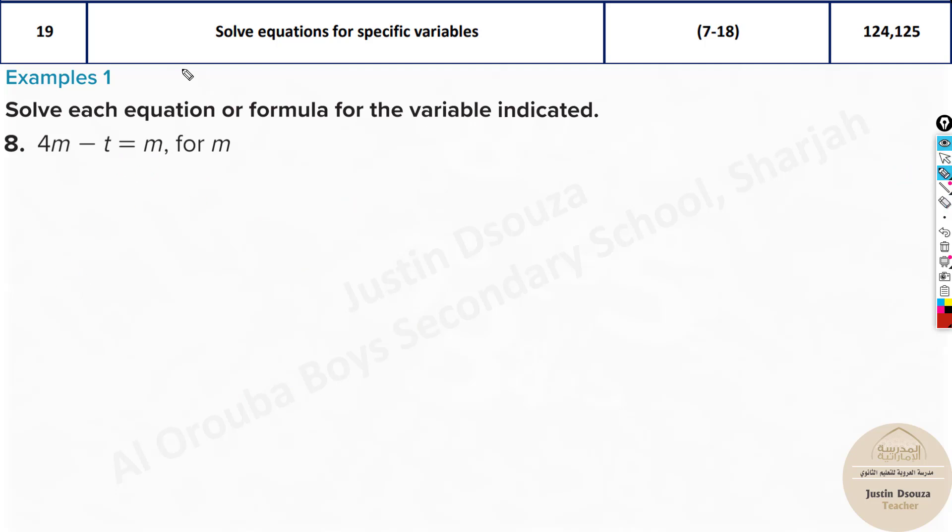Now see here. Don't go to solve for T. You have to solve for M. That means M must be kept alone. Now look at which is the higher variable. Bigger variable. It is 4M. So leave it over there. Take the smaller. Sorry it is not variable. I am telling the coefficient. 4 is a bigger coefficient for the variable M. Here it is only 1. So what you do is take this to the other side. It will be 4M minus M equals minus T goes to the other side. It is plus T. And here 4M minus M will be 3M equals T. M equals T by 3. This is your answer.